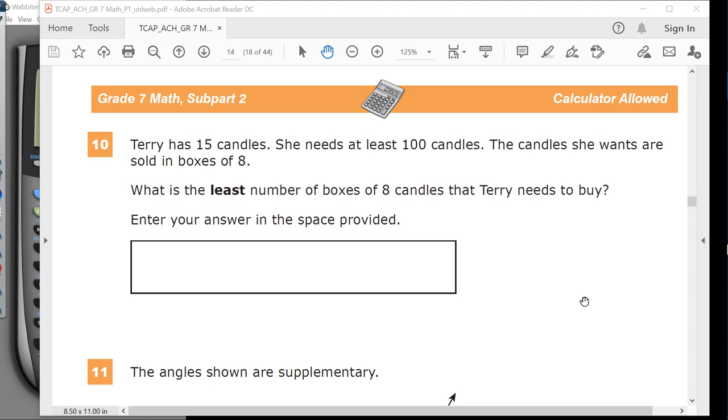Terry has 15 candles. She needs at least 100 candles. Classic Terry, right? Never remembering to bring her candles. You know how it goes. Anyway, the candles she wants are sold in boxes of 8.